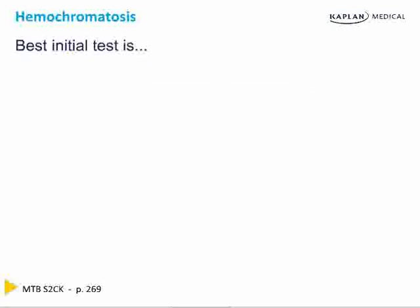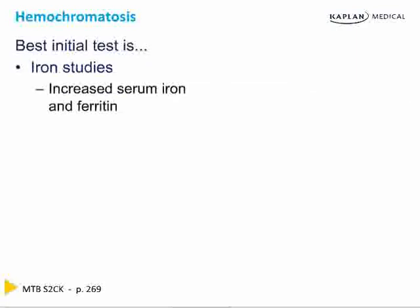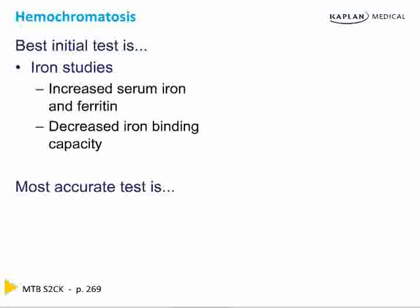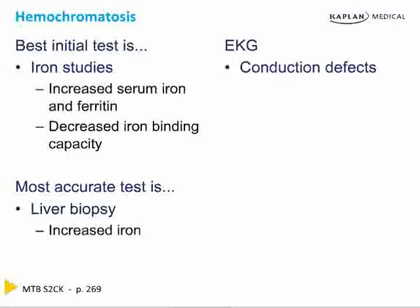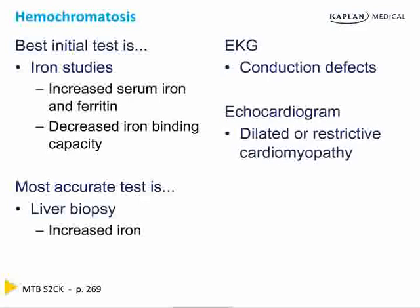The best initial test is iron studies, which will show increased serum iron and decreased iron-binding capacity. The most accurate test is a liver biopsy showing increased iron. An EKG will show conduction defects, and an echocardiogram will show dilated or restrictive cardiomyopathy. The best therapy for hemochromatosis is phlebotomy.